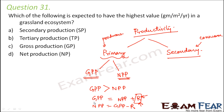Coming back to question 31: which will have the highest value — secondary production, tertiary production, gross production, or net production? Secondary and tertiary production are not correct because as we go higher up the trophic levels, productivity reduces. So options A and B are eliminated. Between gross production and net production, both are types of primary production, and gross production is always more than net production. So the correct option is gross production.